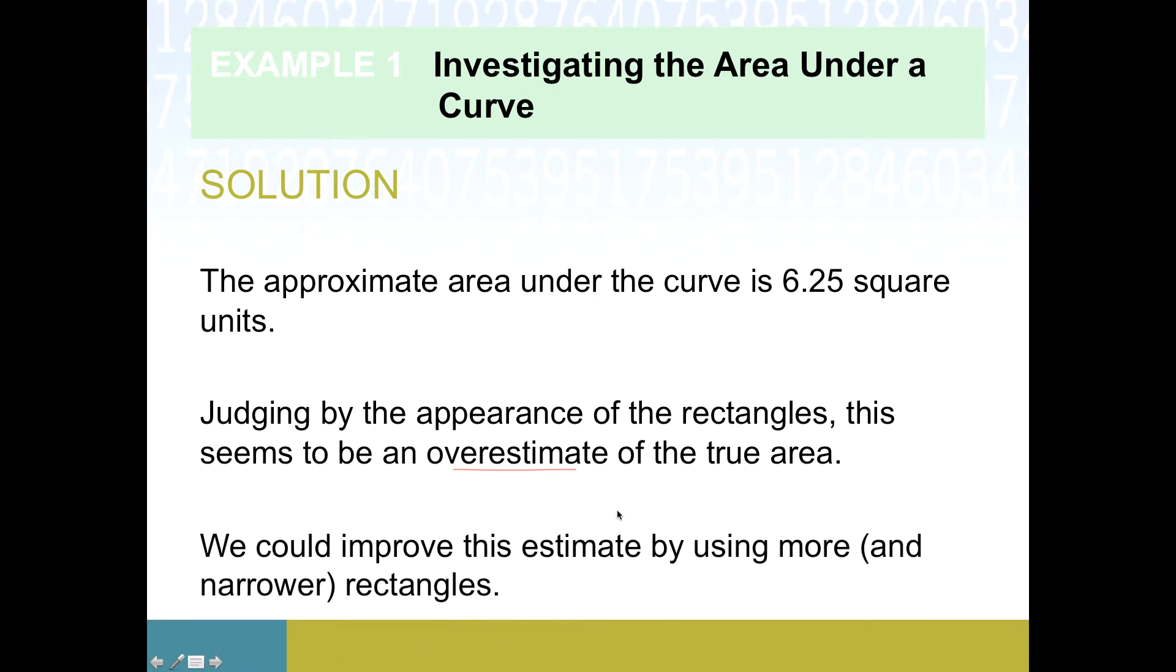So one strategy that we could work with or at least propose is what if we used more rectangles. So still within that 0 to 2 x value range but instead we used you know 10 or 20 rectangles. We didn't do that here because that creates a lot more work for us but you could imagine if we increase the number of rectangles each one would get narrower. They'd be thinner rectangles so there'd be less error in how much area they were accumulating.